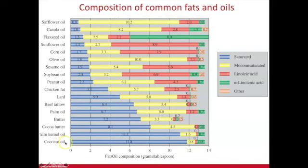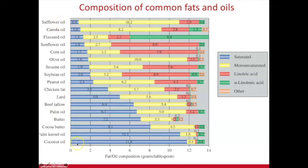Which has the highest amount of saturated fat? Coconut oil. This is compared to safflower oil at the top, which has the lowest amount of saturated fat. Safflower oil also has the highest amount of unsaturated fats — the monounsaturated fat and the linoleic and linolenic acid — making it a healthier option compared to coconut oil.